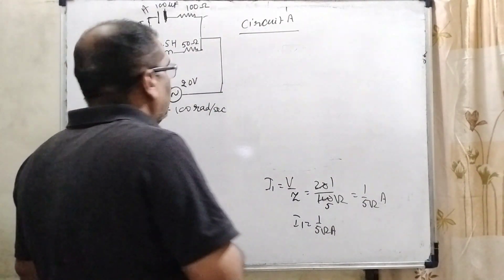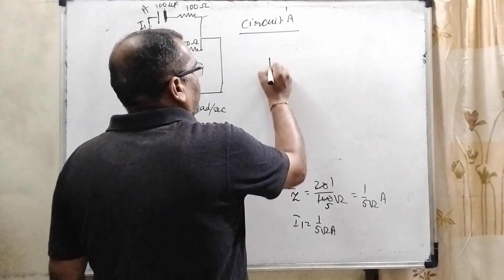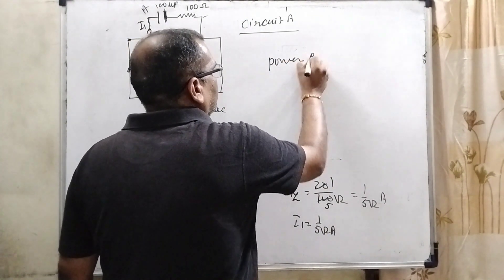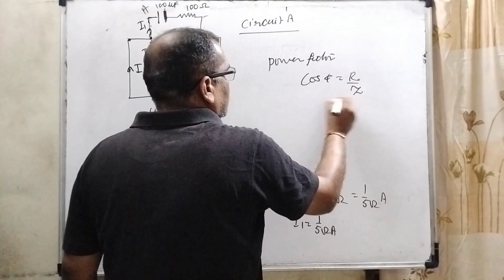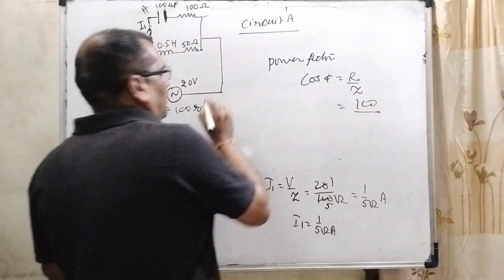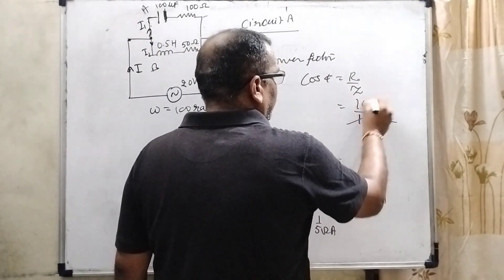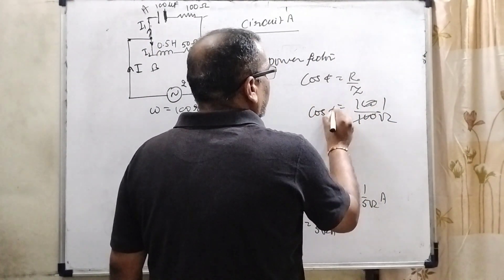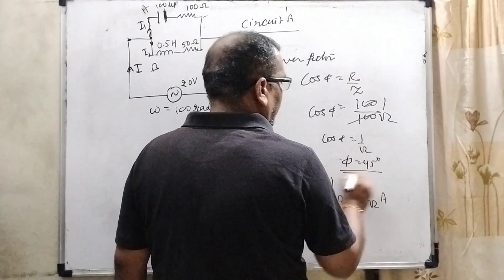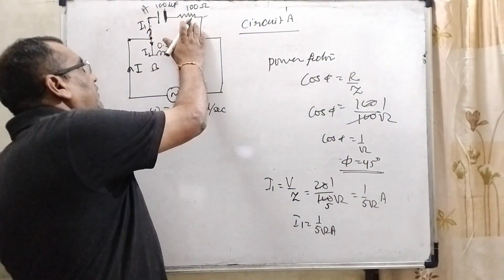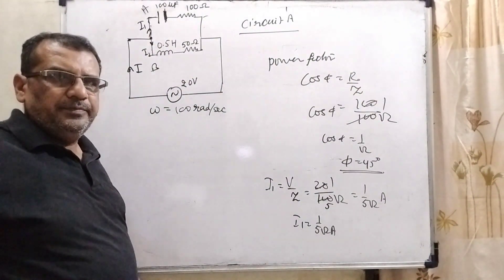Now, let us see what is the phase difference between the capacitor and the resistance. Power factor. What is the formula of power factor? We know that power factor cos phi equal to R by Z. What is R? That is 100. And what is Z? Impedance, that is 100 root 2. 100, 100 cancel out. Then cos phi is 1 by root 2. It means phi equal to 45 degree. So therefore, phase difference is 45 degree between the capacitor and the resistors.